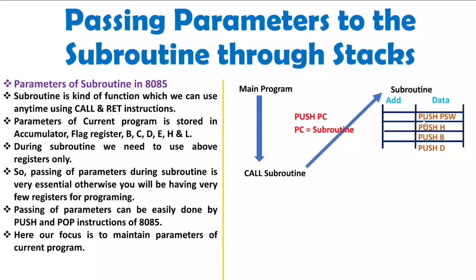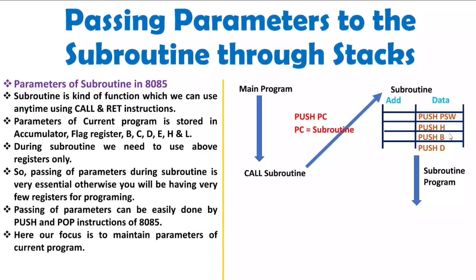When you execute PUSH PSW, the accumulator and flag register will get loaded onto the stack. Then PUSH H means the HL pair will get loaded onto the stack. When you execute PUSH B, the BC registers will get loaded onto the stack. After that, PUSH D means the DE registers will get loaded onto the stack. So the parameters of the program are now loaded on the stack, and all these registers are now free to use in the subroutine, since we have stored the values of all these registers.